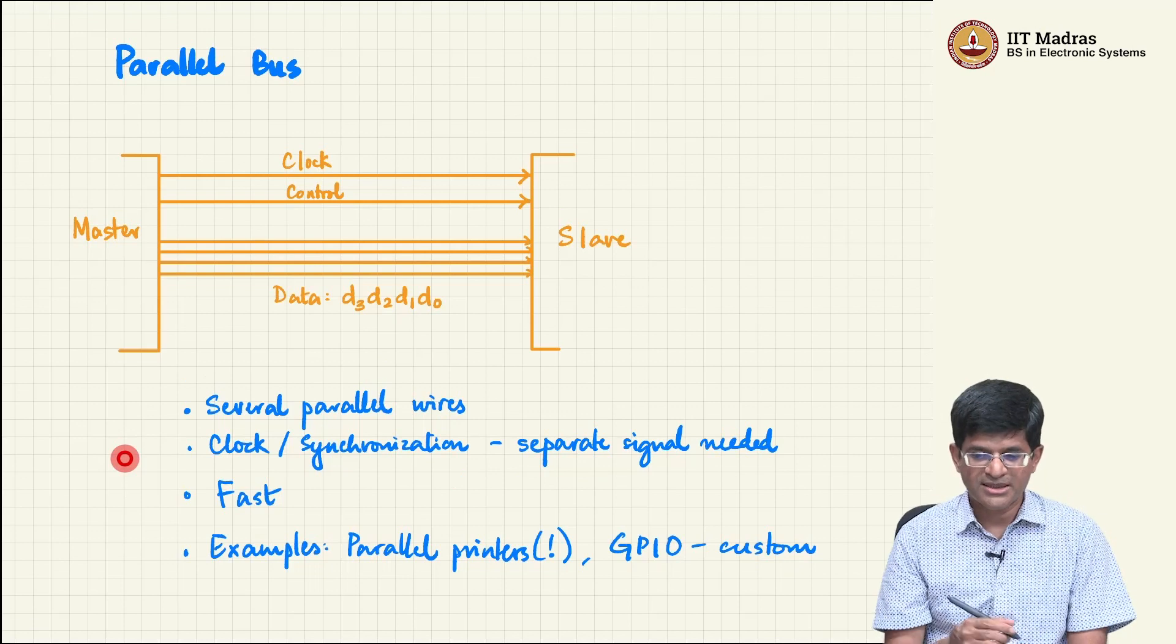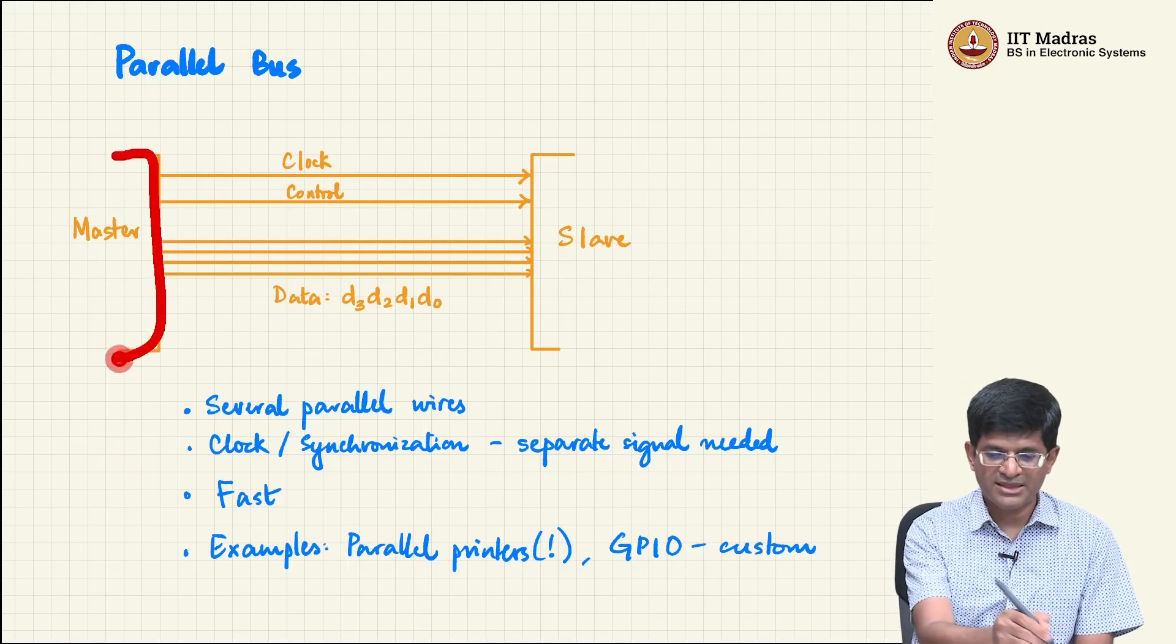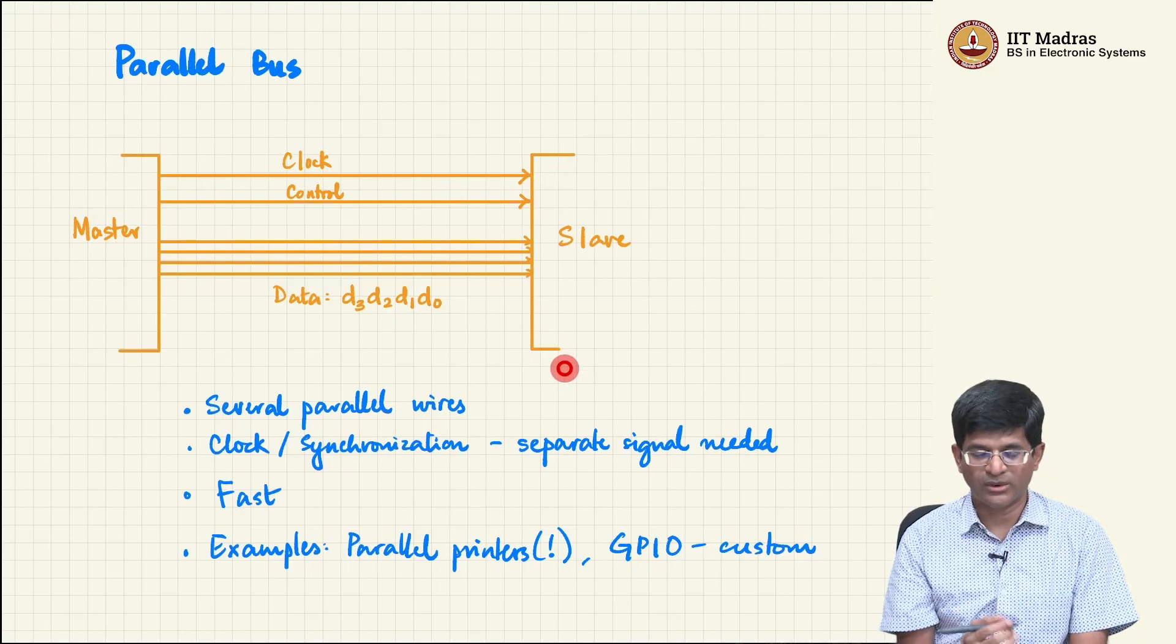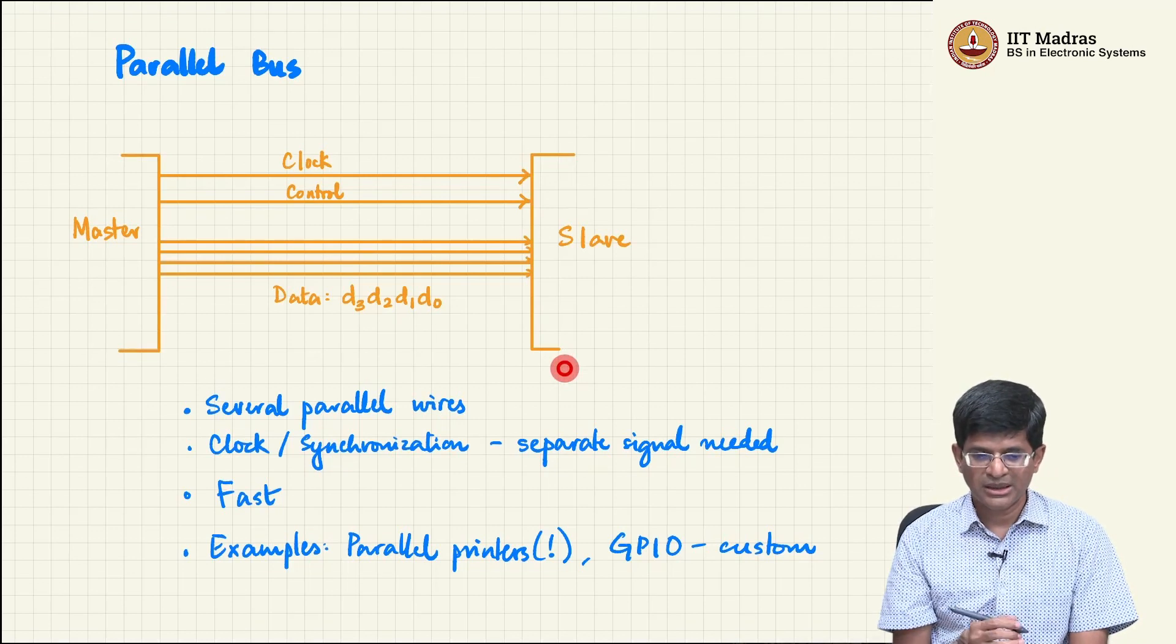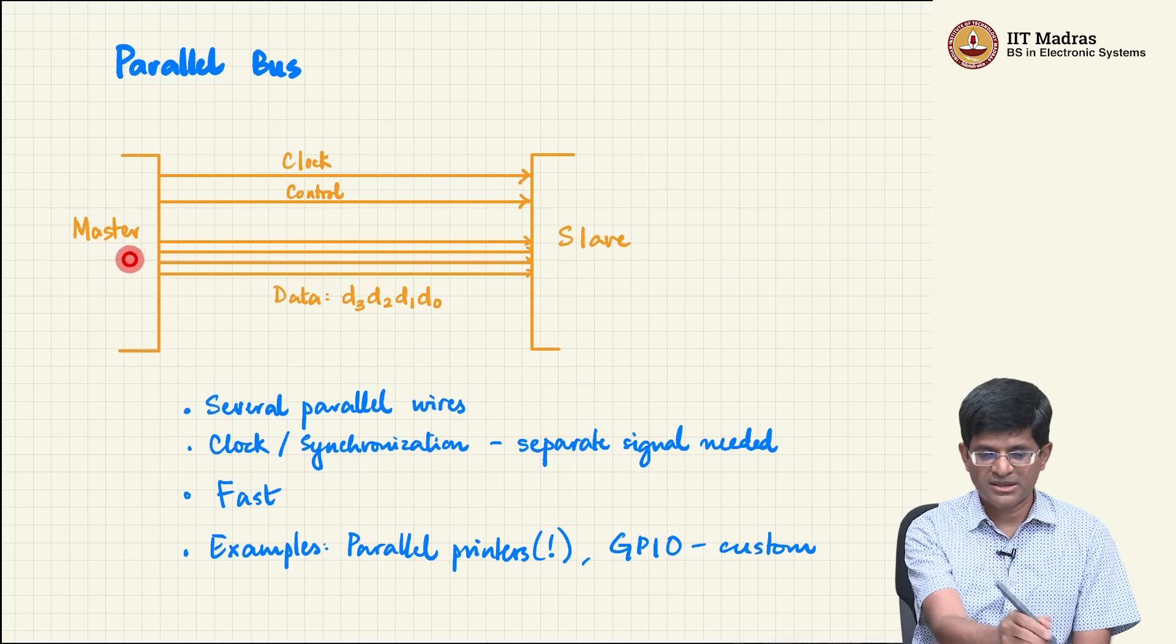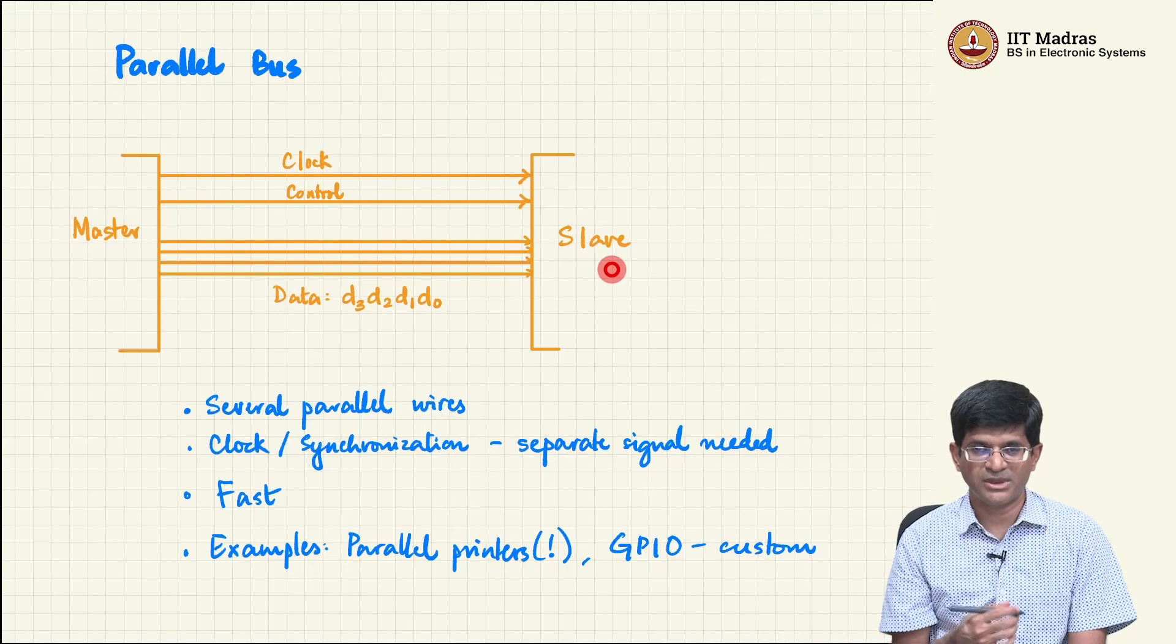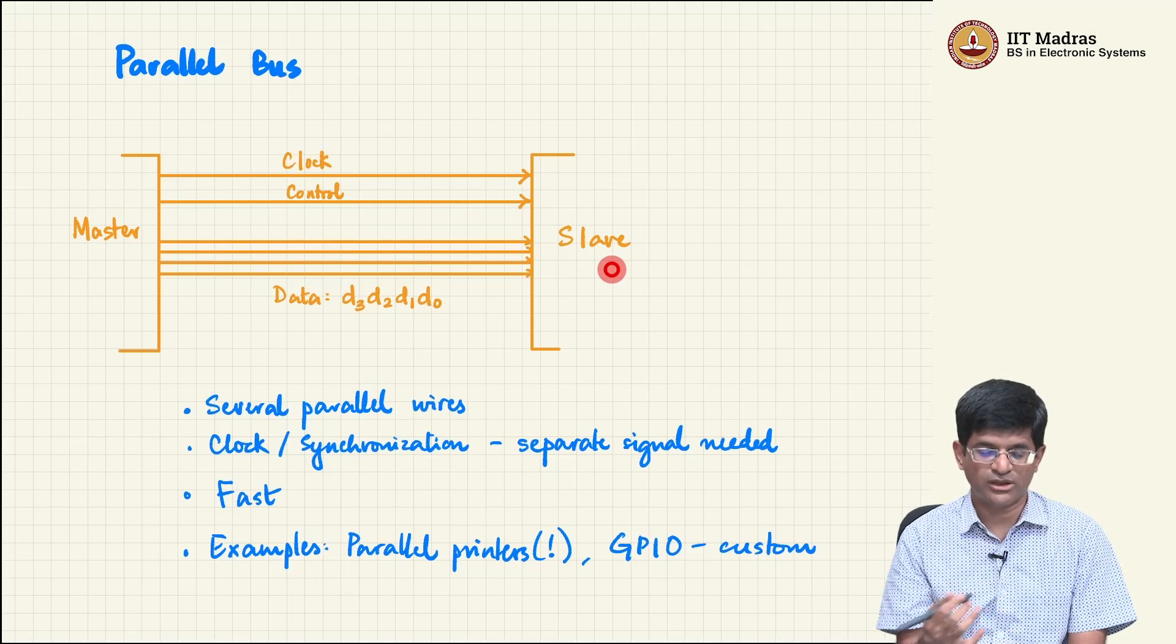The idea behind parallel communication is simple, you have two devices that want to communicate with each other. One thing that I want to repeat, the terminology master slave is very common in the context of communication systems in general, but any kind of control technology.